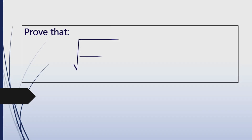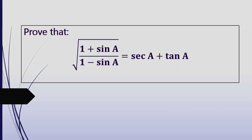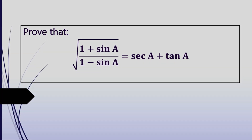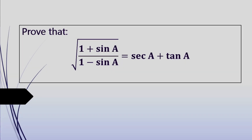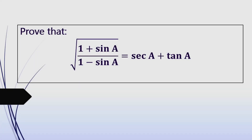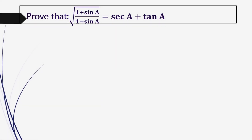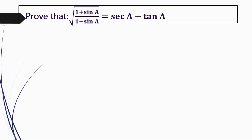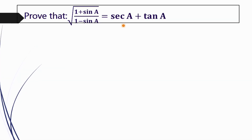Trigonometry. Prove that square root of (1 plus sin A) divided by (1 minus sin A) equals sec A plus tan A.